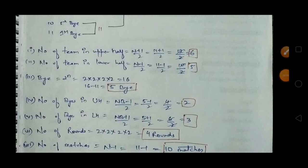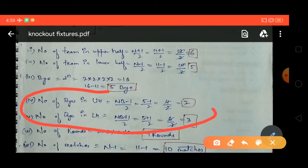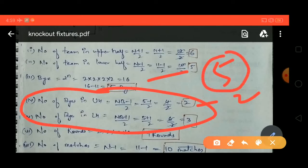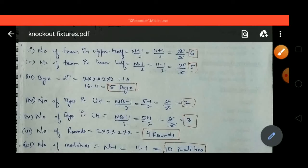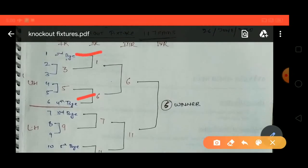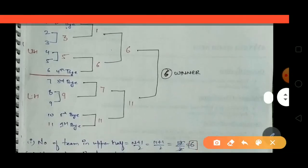We can verify the byes are distributed correctly. The formula for number of byes in upper half is (nb−1)/2, where nb is the number of byes. With 5 byes: (5−1)/2 = 4/2 = 2 byes in upper half. For lower half: (nb+1)/2 = (5+1)/2 = 6/2 = 3 byes in lower half. Checking: upper half has 2 byes and lower half has 3 byes — this is correct.